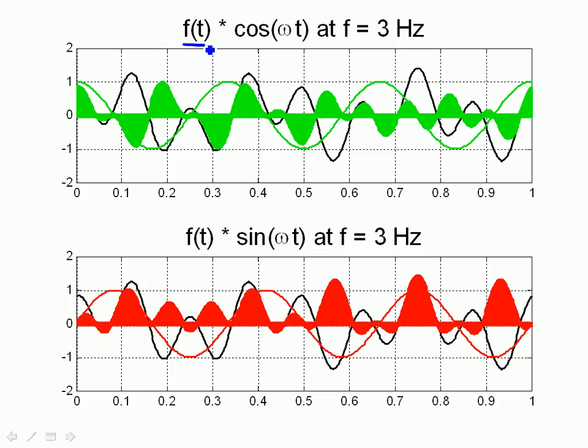I'm taking my function, f(t), and I'm multiplying it by the cosine, the real part, at my cosine frequency, 3 hertz. When I do that, look at what I see.